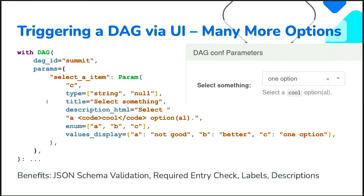The enum option from JSON schema limits validation to the list items in the enum list. On the right side it renders a dropdown, so the user can only select what is there, and the backend validates this. Sometimes you have technical values like A, B, C that nobody understands, so we added a property called values_display. That gives the user a descriptive text to select from while the actual technical value is passed as the parameter.